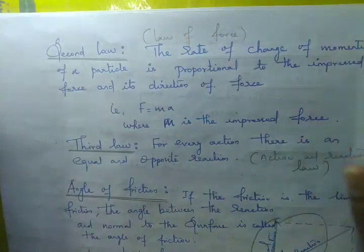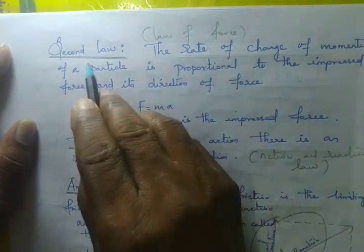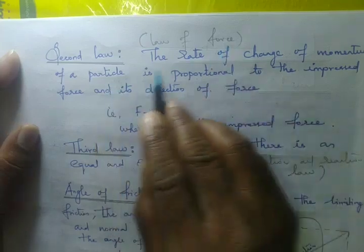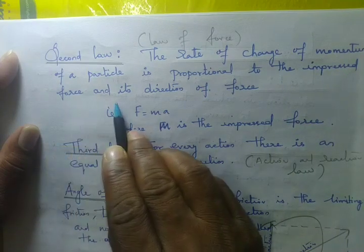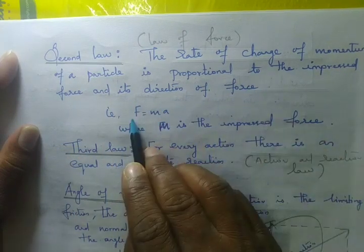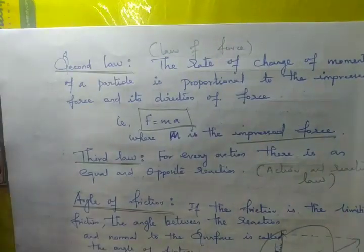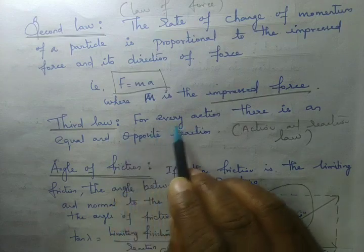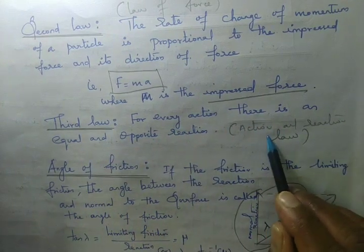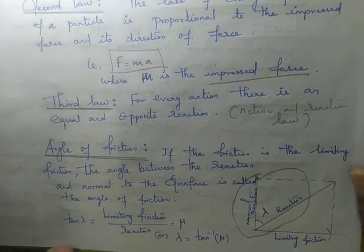Second law — Newton's second law, another name for it is the law of force. The rate of change of momentum of a particle is proportional to the impressed force and acts in its direction. That is F = ma.